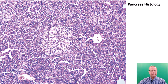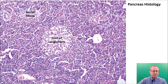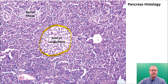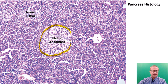At 400x, you can see the acinar tissue secreting enzymes such as trypsin and bicarbonate, but then you also see something called the islets of Langerhans — a circular structure responsible for secreting insulin and glucagon. These two hormones help regulate blood sugar: insulin helps lower blood sugar by bringing sugar into cells, and glucagon helps break down glycogen and free up more glucose for the bloodstream.